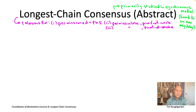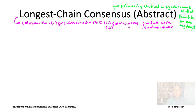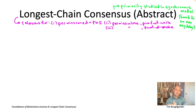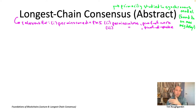You assume every message ever delivered arrives within capital delta time steps. For a protocol over the internet, you might set capital delta to be the equivalent of ten seconds. We'll briefly discuss the partially synchronous model at the very end of lecture eight to stress-test longest chain consensus and see what breaks down during network outages. But for most of the lecture, we'll prove positive results in the synchronous model.